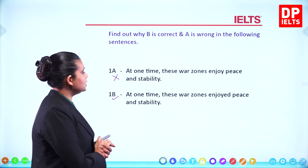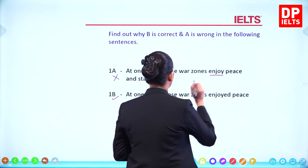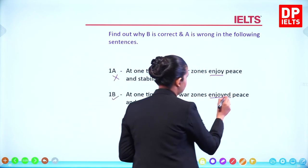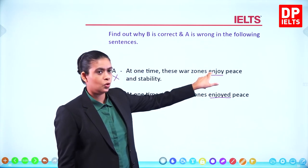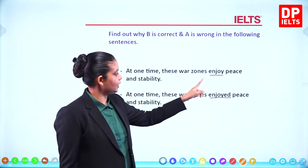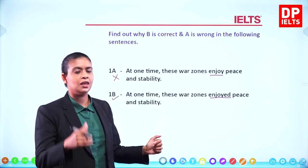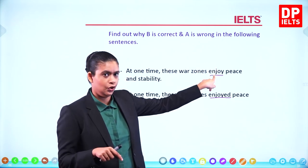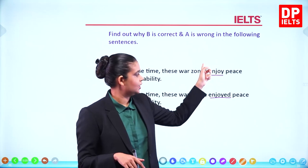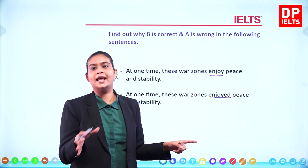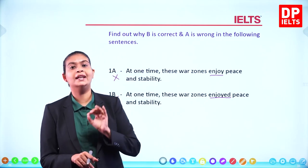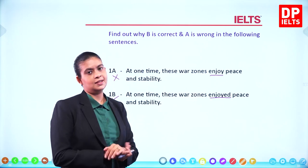'At one time these war zones enjoyed peace and stability.' Enjoy is a regular verb — enjoy, enjoyed. If it happened at a specific time in the past, it should be simple past tense. That is why A (enjoy, the base form) is incorrect — it becomes present tense. Adding ED gives 'enjoyed,' which makes the sentence correct.